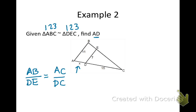So, putting in the numbers, I have 11 over 7 is equal to, and in this case I have for the whole side length AC, X plus 15, and that is over DC, which is 15.